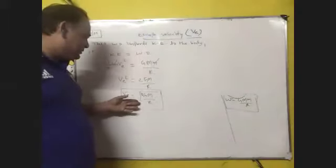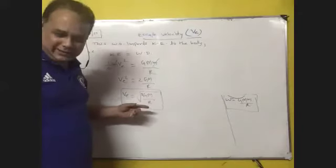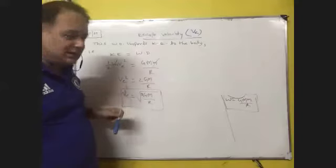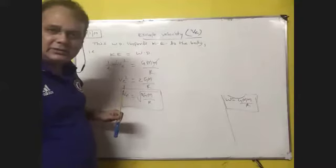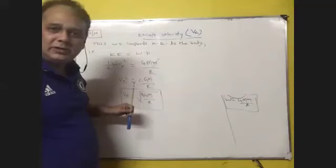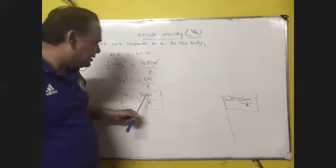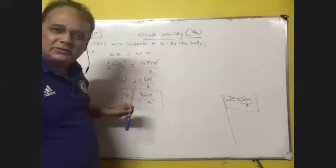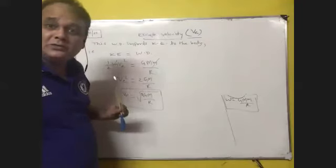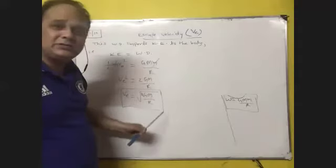So V equal to under root 2GM upon R, and look here, the speciality: 2 is constant, capital G is universal gravitational constant, capital M is mass of Earth which is also constant, capital R is radius of Earth which is also constant. It means escape velocity is constant.